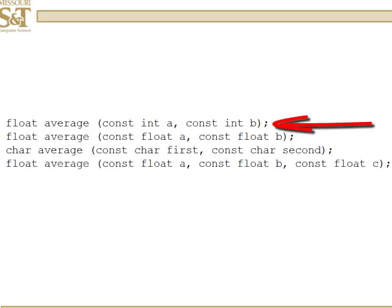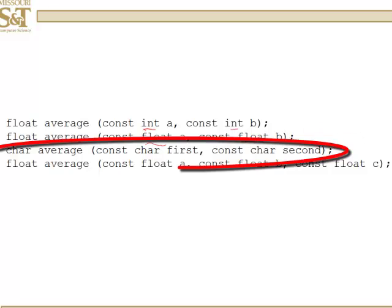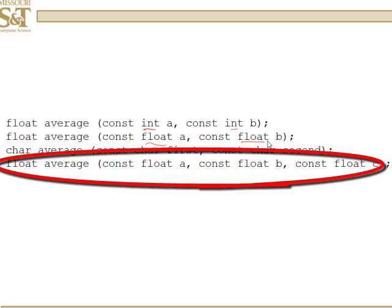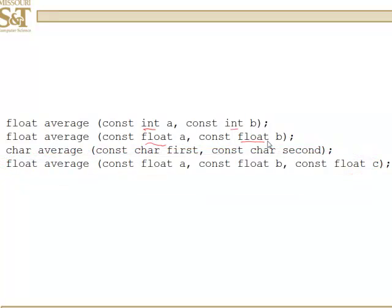Here we have an average function that is going to average two integers. But suppose we also want to average two floats, and perhaps we want to do it in a different way. So we declare and define, presumably, another function called average that will take two floats. And likewise, we want to average two characters and we want to average three floats. So how is this going to work?